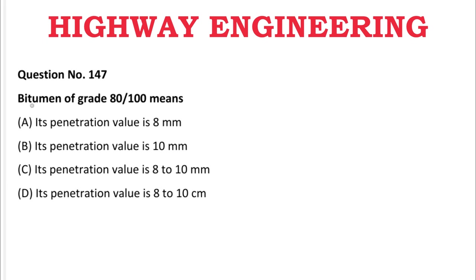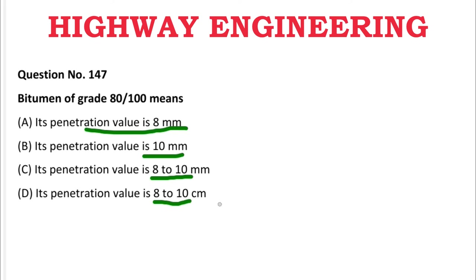Next question: Bitumen of grade 80/100 means — A: its penetration value is 8 mm, B: its penetration value is 10 mm, C: its penetration value is 8 to 10 mm, D: penetration value is 8 to 10 cm. The correct answer is C, its penetration value is 8 to 10 mm.